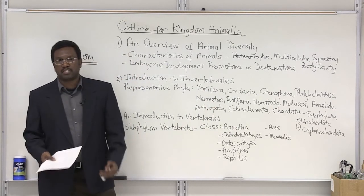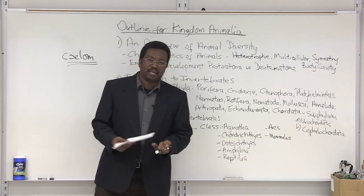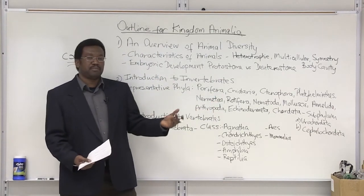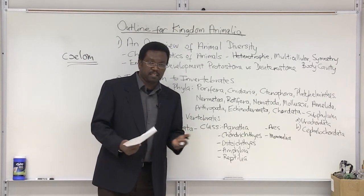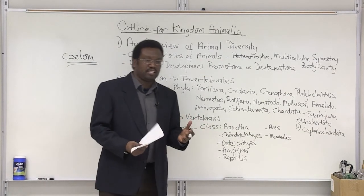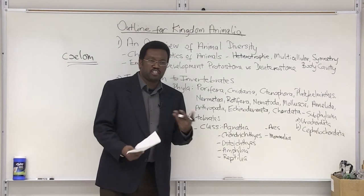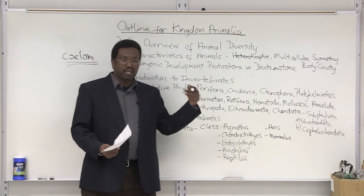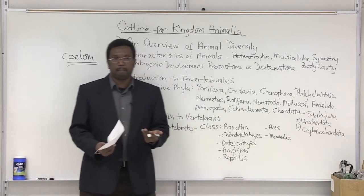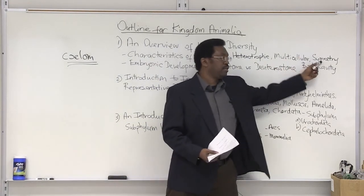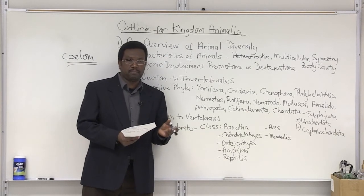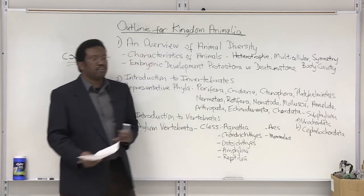Porifera — examples are sponges. If you think of a commercial sponge that you have in your kitchen, it resembles the actual animal. A sponge is going to be an exception to motility; it's a sessile organism and a filter feeder. It's very simple in terms of body development, having only a tissue level of organization. From the germ layers, it would be diploblastic. It doesn't have a body cavity, and as far as symmetry, it's considered asymmetrical.